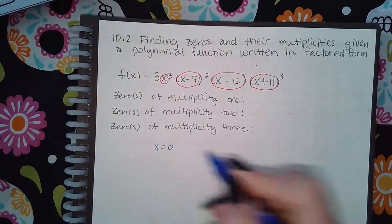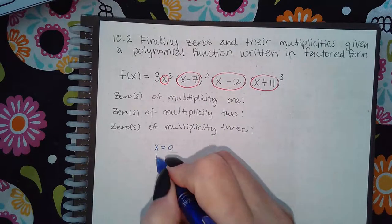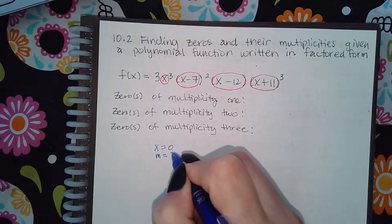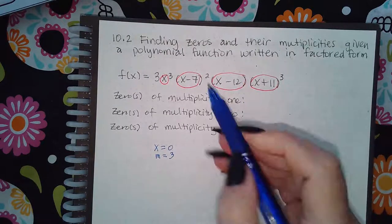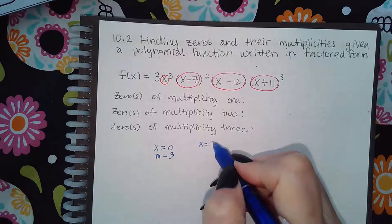I will get x equal to zero, but notice the exponent is three, so the multiplicity for this guy is three. If I take this factor and set it equal to zero, I'll have to add seven over, so I'll get x equal to positive seven, and then notice that its multiplicity is two.